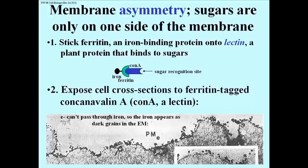And the little black dots are iron attached to ferritin, which is in turn attached to con-A, which as you can imagine, is now attached to the glycocalyx, to the sugars on the cell surface of this cell. And if you look carefully, you can see that all of the black dots are on the outside of the cell, not on the inside, and the inset shows some of these black dots in much higher magnification.